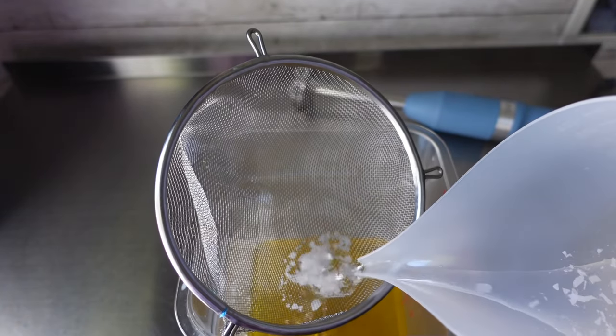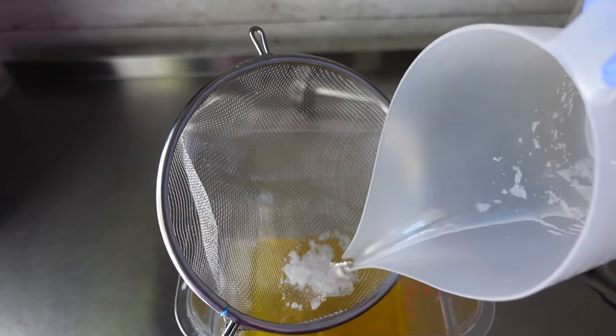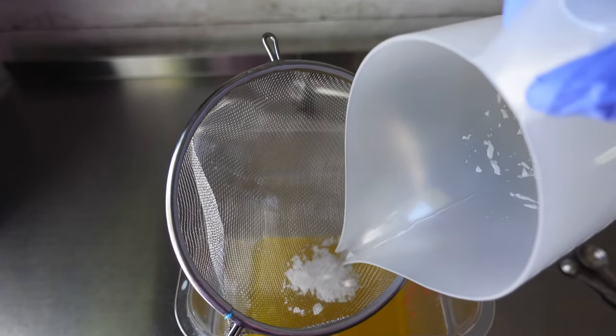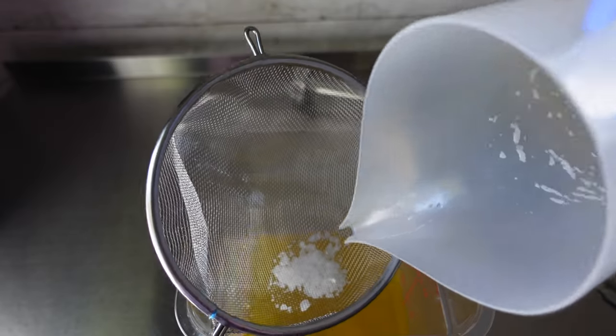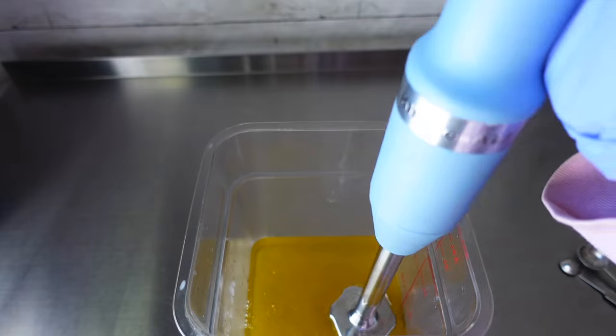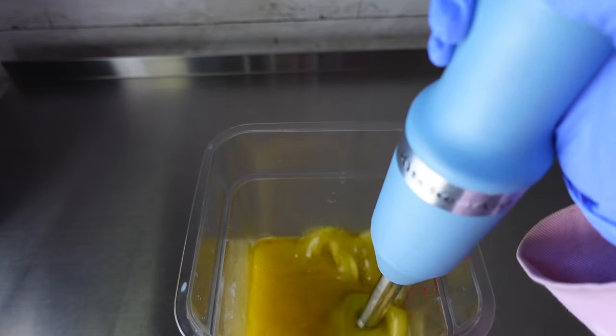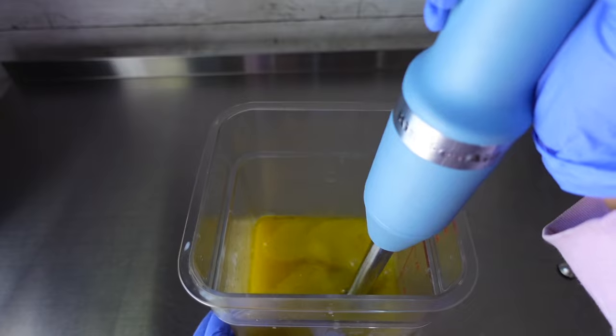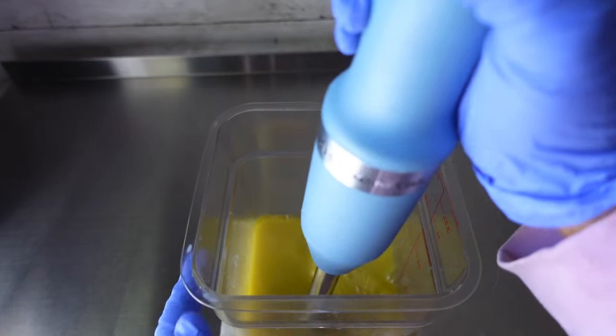Alright, so once my oils and butters and my water lye solution had cooled down, it was then time for me to add them together. Now, I did soap at about 100 degrees. So, both of these were literally 100 degrees, my water lye solution as well as my oils and butters. Once I added that in, then all I did was just use my stick blender and blended this until I reached my desired trace.